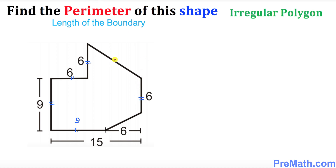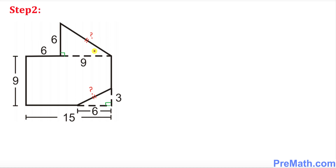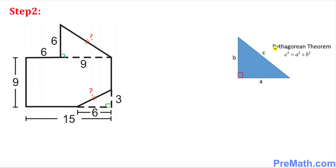The only thing we need to figure out is this diagonal side, and this side as well. In the next step, to make things easier, I have created two right triangles so we can figure out these unknown sides. These are right triangles since their angle is obviously 90 degrees.